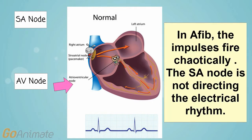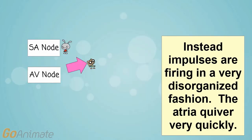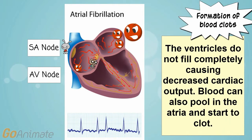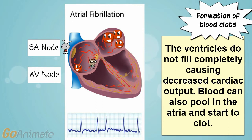In AFib, the electrical impulses fire chaotically. The SA node is not directing the electrical rhythm; instead, impulses are firing in a very disorganized fashion. The atria quiver very quickly, and the ventricles do not completely fill, causing decreased cardiac output.